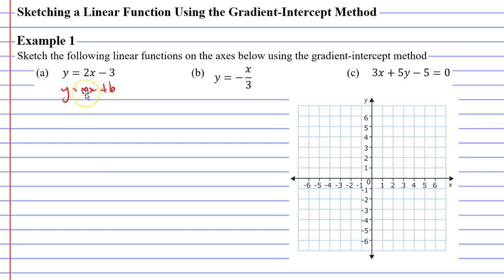We can see that m, or the gradient, is 2. We can also see that b, or our y-intercept, is negative 3. So we'll start by labeling our y-intercept of negative 3.